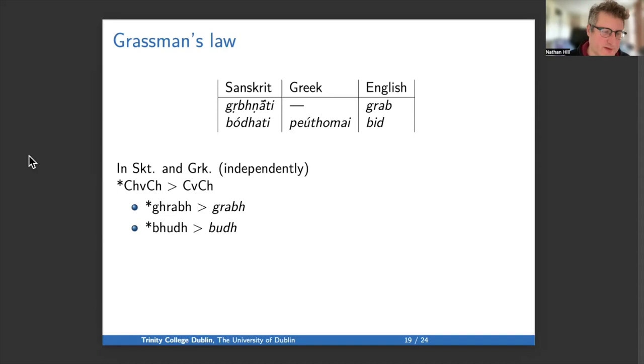So Grassmann's proposal is that both in Sanskrit and Greek independently, if you had aspiration on either side of a vowel, the aspiration was lost from the consonant before the vowel. So we have grabh becoming grab, so the g de-aspirating. And then budh becomes budh, so the b de-aspirating. Just to make clear, this hypothesizes that in Indo-European everything works. So Indo-European had gh, bh, and then that gave us the g in Sanskrit through Grassmann's Law and the g in English through Grimm's Law. And similarly, Indo-European had something like bh-u-dh, and then that becomes b-u-dh in Sanskrit through Grassmann's Law, and it becomes b in English through Grimm's Law.